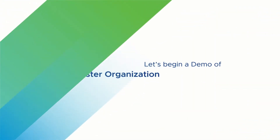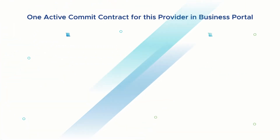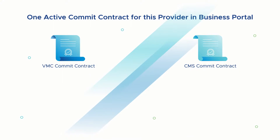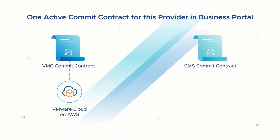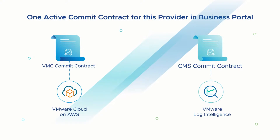Let's begin a demo of creating a master organization. There are certain prerequisites that are needed: one active commit contract for this provider in Business Portal, for either VMware Cloud on AWS service, also called VMC contract, or for VMware Log Intelligence Cloud using Cloud Management Service, or CMS contract.